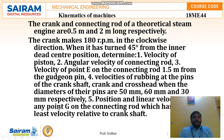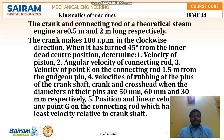Based on this data, we need to find out all five conditions: velocity of the piston, angular velocity of the connecting rod, velocity of rubbing at the crankshaft, crank and crosshead pins, and the position and linear velocity of point G.